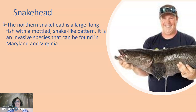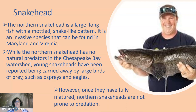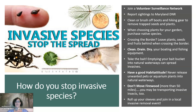The northern snakehead is a large, long fish with a mottled snake-like pattern. It is an invasive species that can be found in Maryland and Virginia. While the northern snakehead has no natural predators in the Chesapeake Bay watershed, young snakeheads have been reported as being carried away by large birds of prey such as ospreys and eagles. However, once fully matured, northern snakeheads are not prone to predation. I took a summer course and one of our instructors said he catches these and they taste very good.